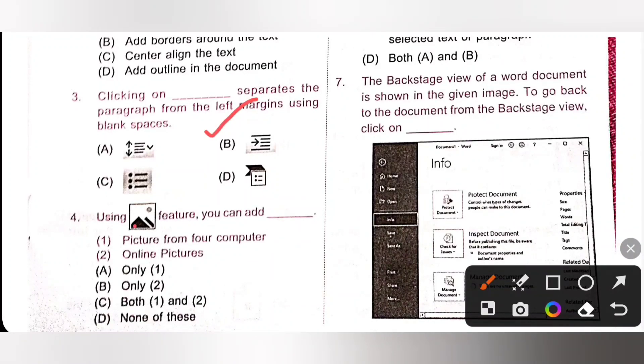Fourth one, using feature you can add dash one picture from your computer to online pictures. So using this feature we can add both, both one and two. We can add picture from our computer as well as online pictures. So option C is the correct answer.